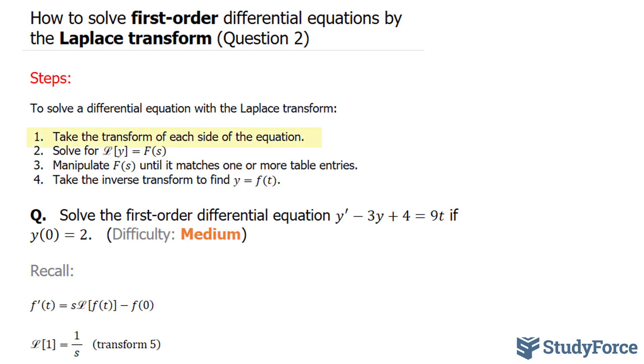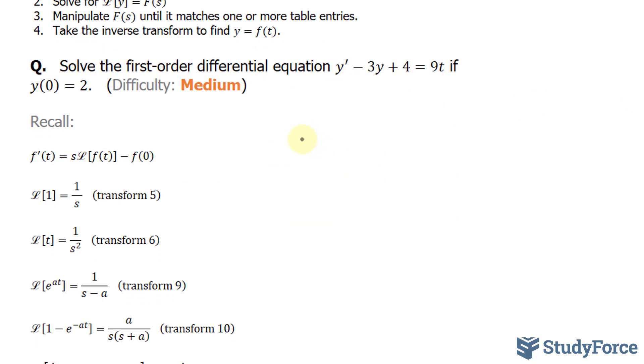Starting with step number one, we have to take the Laplace transform of each side. So we'll take the transform of y' minus the Laplace transform of 3y (I'll pull out this 3 later), plus the Laplace transform of 4 equals the transform of 9t.